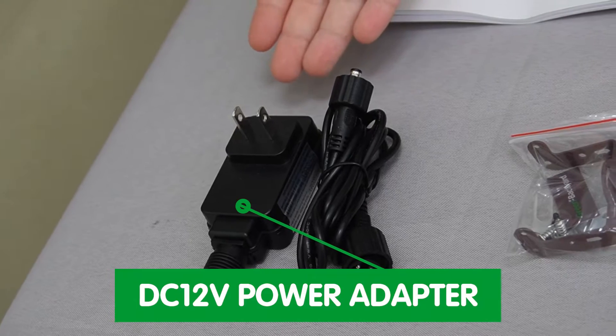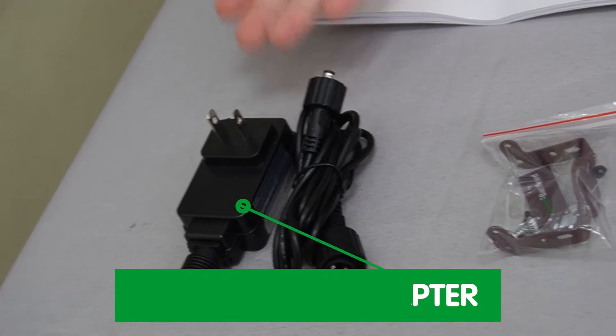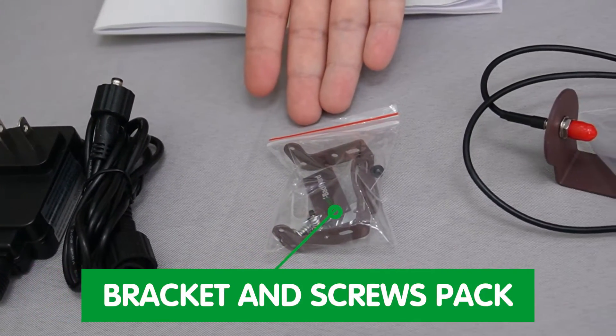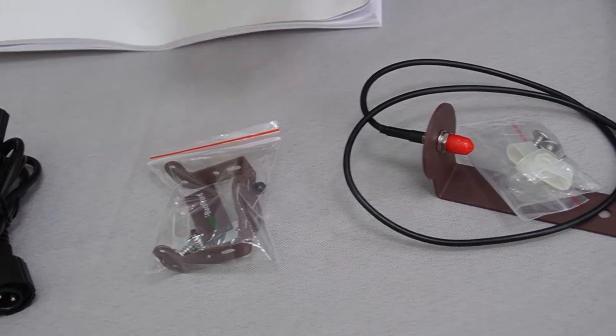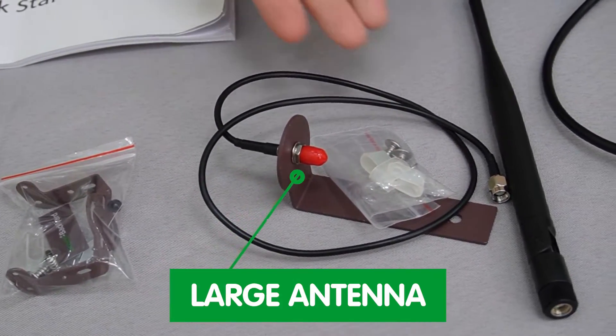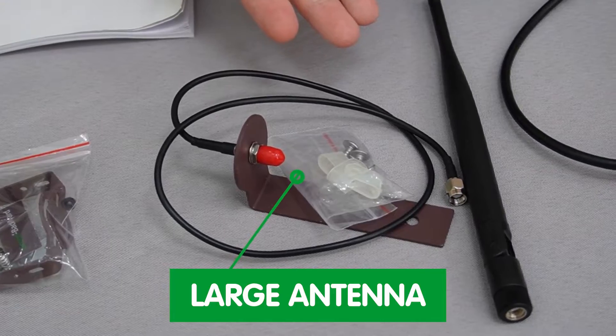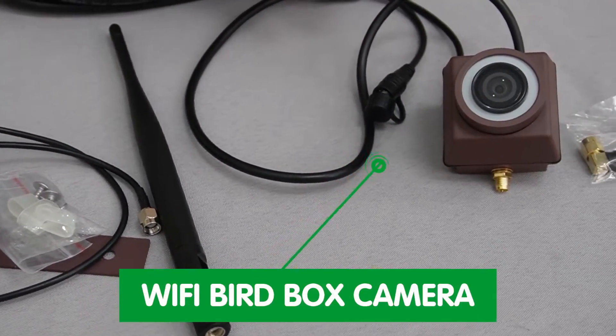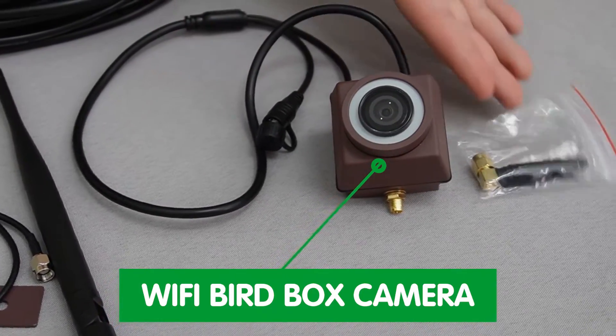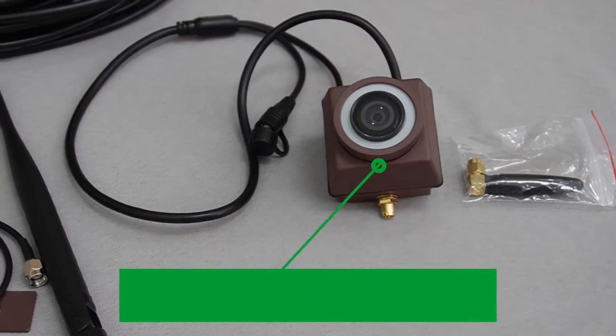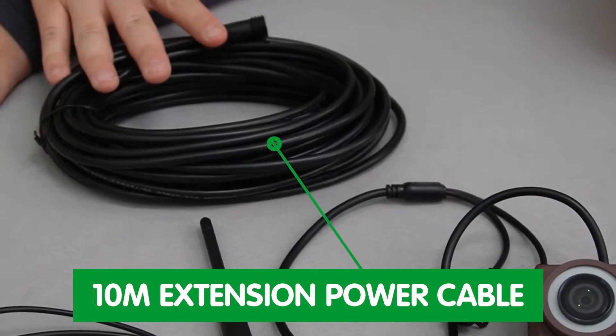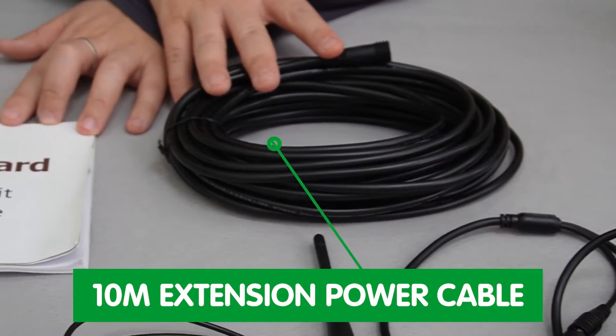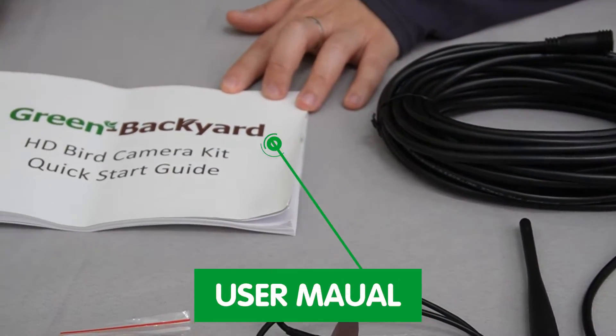We have a DC 12-volt power adapter, a bracket and screw pack for easy installation, a large antenna for optimal reception when you install the camera in the bird house. Also, our wireless bird box camera itself with its standard antenna. This is a 10-meter extended power cable. And of course, a user manual.